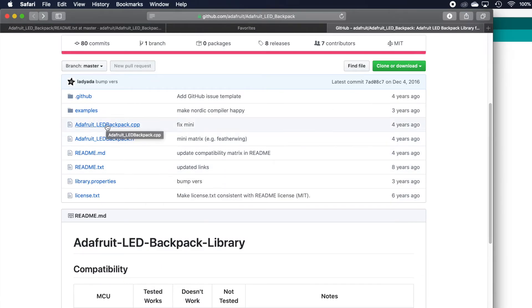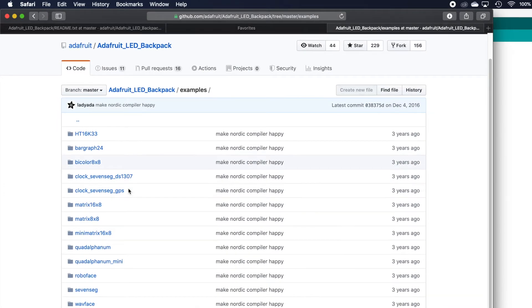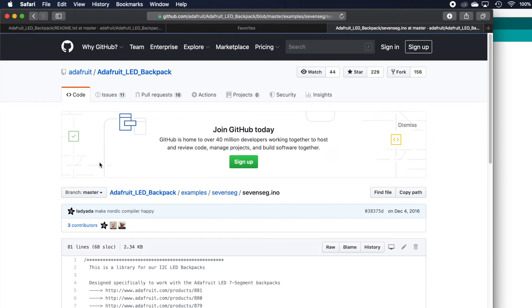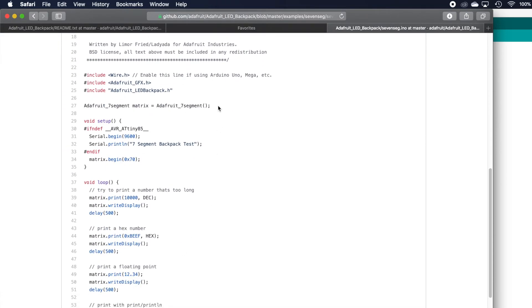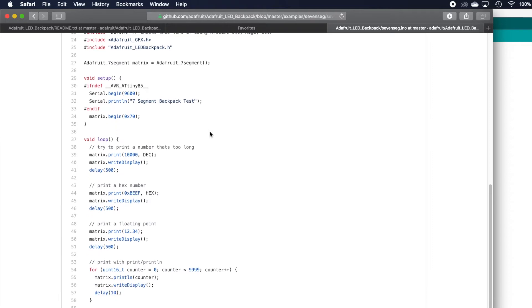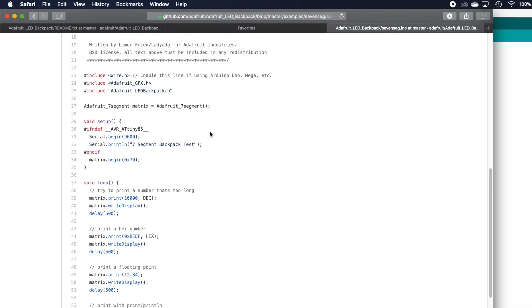Now these backpacks are used for quite a few different things including some LED matrices so you want to make sure that you get the code for the LED backpack and that's called the seven segment example here. All I'm going to do is select all of that example code and copy it and paste it into a brand new Arduino project file.